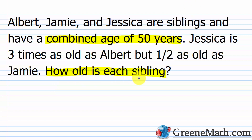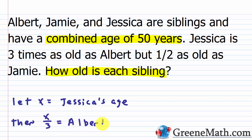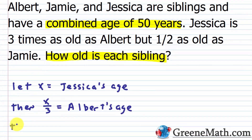To solve this, let's assign a variable. Since Jessica is involved in both comparisons, let x equal Jessica's age. We're told Jessica is three times as old as Albert, meaning Albert is one-third the age of Jessica—so x/3 equals Albert's age. We're also told Jessica is half as old as Jamie, meaning Jamie is two times as old as Jessica. So 2x represents Jamie's age.